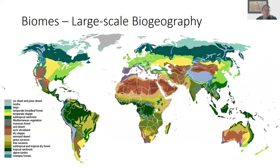You can try to understand really large-scale biogeography by looking at these patterns and biomes across the planet. Here you can see some pretty detailed biomes with political boundaries drawn over the top. Biomes are something covered in a general ecology or biology class, and you can dig into them more in the textbook.